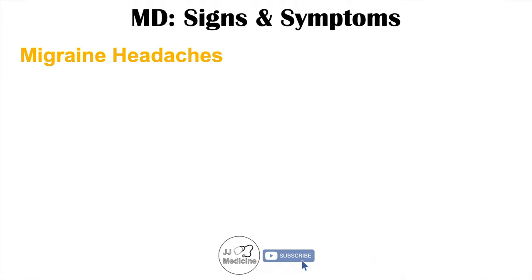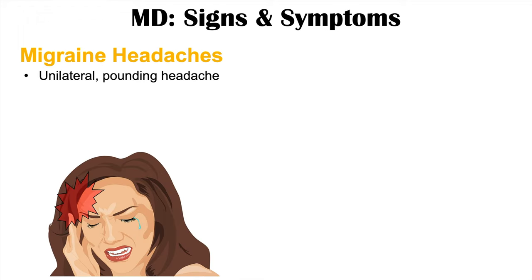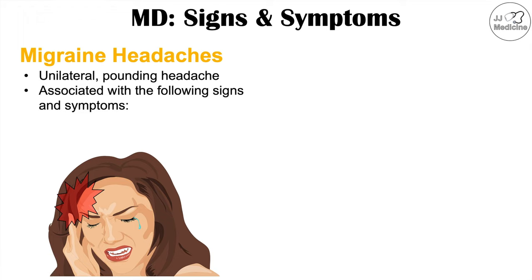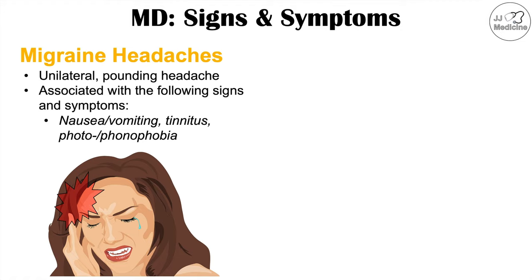Meniere's disease is associated with other conditions, one of those being migraine headaches. A migraine headache is a unilateral pounding headache often associated with nausea and vomiting, tinnitus, photophobia (sensitivity to light), and phonophobia (sensitivity to sound). There are many other signs and symptoms that occur with migraine headaches; please check out my full lesson on that topic for more information.